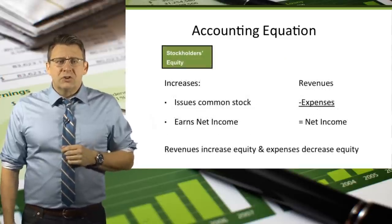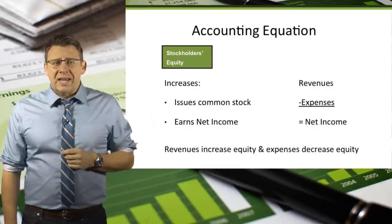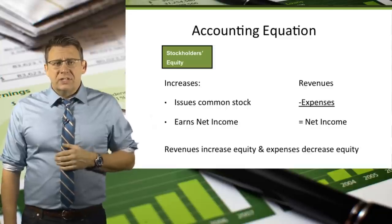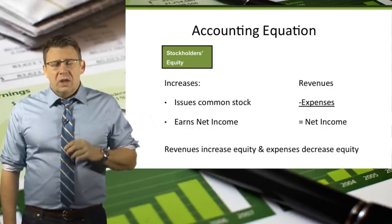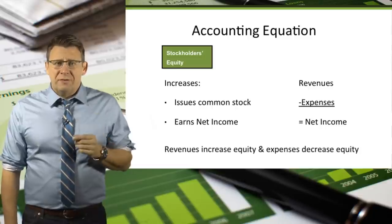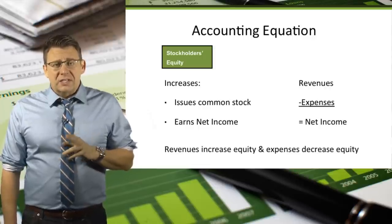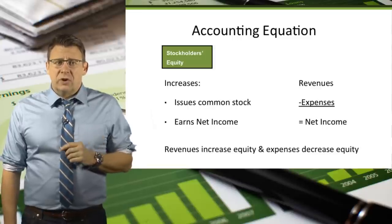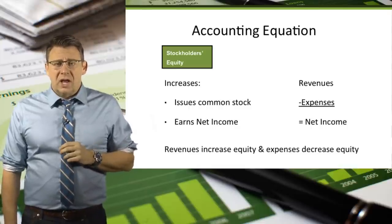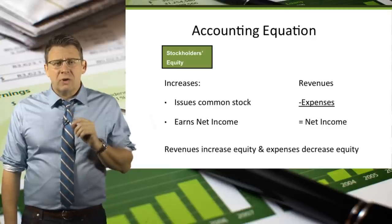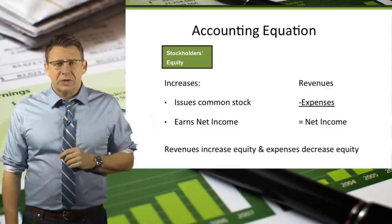Stockholders' equity is increased when a corporation issues additional stock to stockholders and when it has net income. It is decreased when it pays dividends to stockholders and when it has a net loss. Net income is revenues minus expenses when revenues are greater than expenses. Net loss is revenues minus expenses when expenses are greater than revenues. So another way to think about the impact of net income or net loss on the accounting equation is that revenues increase stockholders' equity and expenses decrease stockholders' equity.